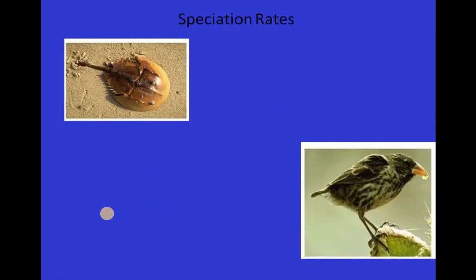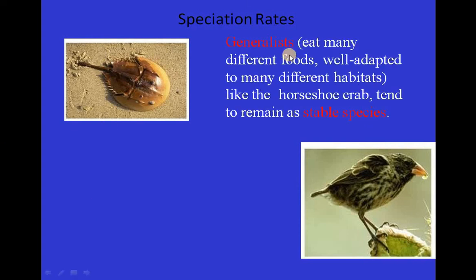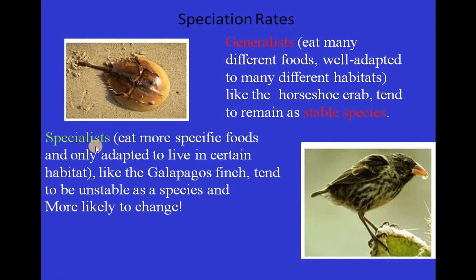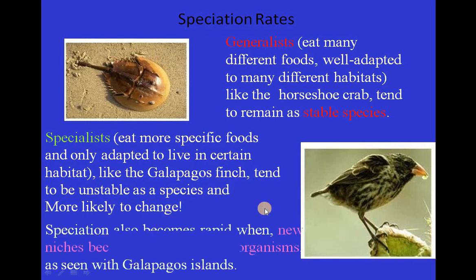There can be two different speciation rates — fast and slow — because of the nature of the organism. Generalist organisms eat many different kinds of food and are well adapted to many different habitats, like the horseshoe crab, and tend to remain as stable species. Specialist organisms eat more specific foods and are only adapted to certain habitats, like the Galapagos finch, tending to be unstable as a species and more likely to change. Speciation also becomes rapid when new niches become available, as seen in the Galapagos Islands.